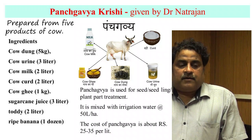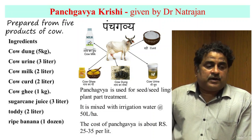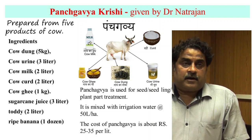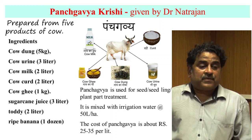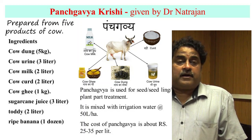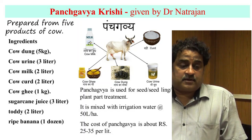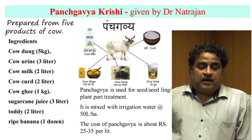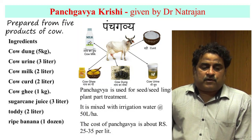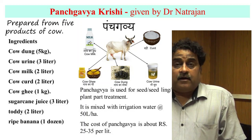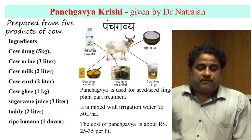Panchagavya Krishi was given by Dr. Natarajan. It uses five products of the cow: cow dung, cow urine, cow milk, cow curd, and cow ghee. These five products are utilized for the preparation of Panchagavya. Sugarcane juice, toddy, and ripe banana are also used to enhance the fermentation process. Panchagavya is used for seed or seedling treatment and plant treatment. It is mixed with irrigation water at 500 litres per hectare and applied to the field. The cost of Panchagavya is about 25 to 35 rupees per litre.